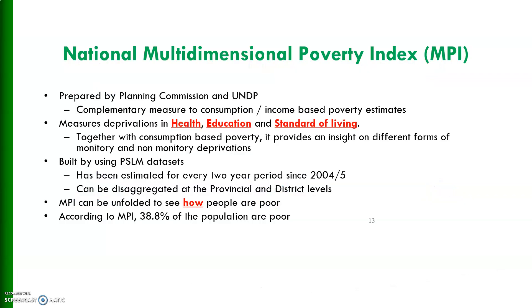The National Multidimensional Poverty Index is prepared by the Planning Commission and UNDP. It is a complementary measure to consumption and income-based poverty estimates, measuring deprivation in health, education, and standard of living, built using PSLM datasets. It has been estimated for every two-year period since 2004-05 and can be disaggregated at the provincial and district levels. According to the MPI, about 39% of the population are poor.